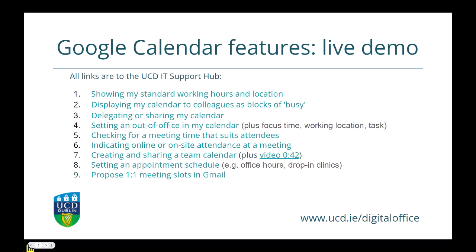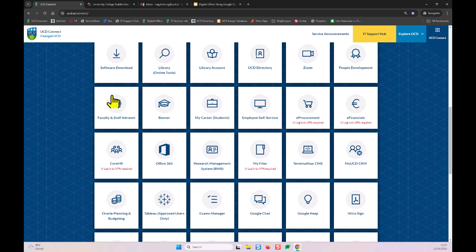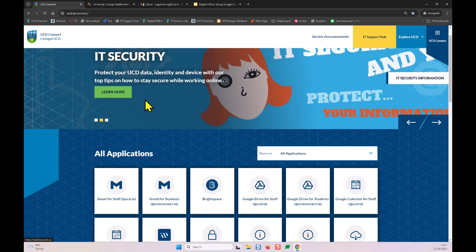Here is a list of the features we're going to look at today — nine features in total, seven standard and two extras. For this I will go live to the Google Calendar UI. The slides will be available underneath the video with images and links to articles with further instructions.